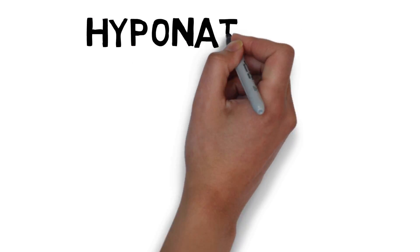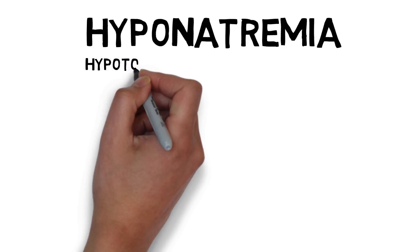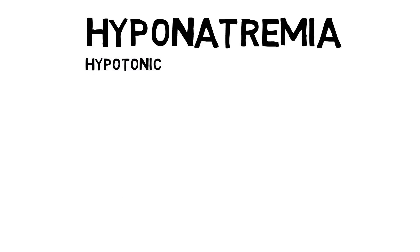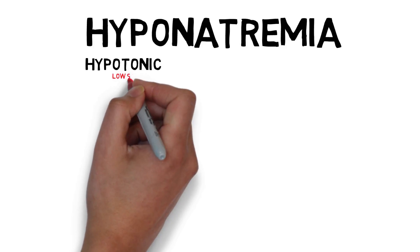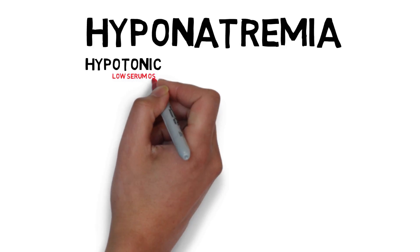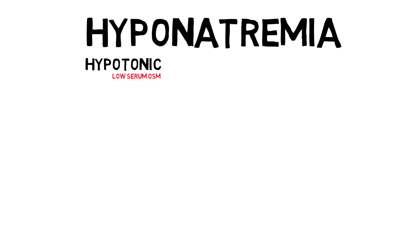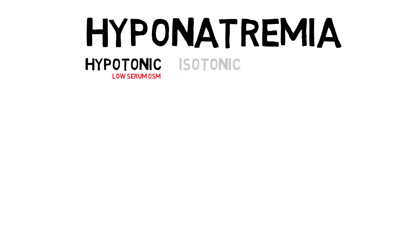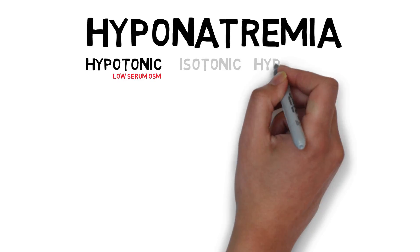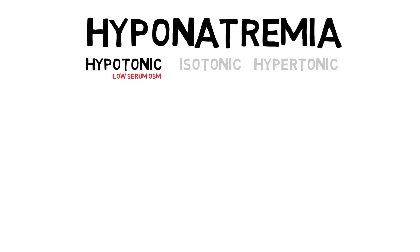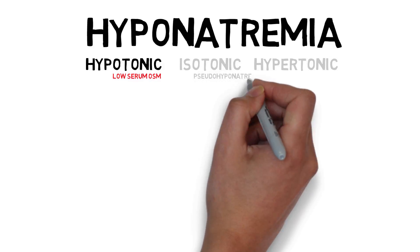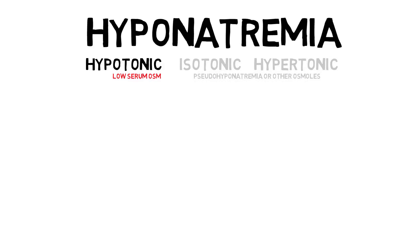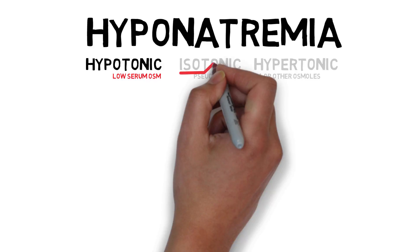An actual hyponatremia is a hypotonic hyponatremia. This means that the tonicity or osmolality in serum is lowered, because sodium is the most important contributor to serum osmolality. Hyponatremia can also be isotonic or hypertonic, which is caused by either lab errors in pseudohyponatremia, or by other osmols, like in hyperglycemia. These types of hyponatremia are not discussed in this video.